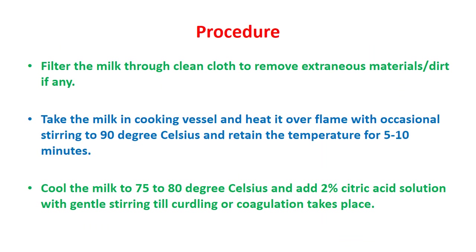Here we will discuss more details about the procedure. First, filtration of milk through cloth to remove extraneous materials or dirt. Second, the milk is heated — with a gas flame for small scale, or in a large stainless steel rectangular vessel with internal heating for large scale — up to 90 degrees Celsius and left for 5 to 10 minutes. After that it is slowly cooled to 75 to 80 degrees Celsius, the suitable temperature for coagulation. The coagulant is 2% citric acid solution prepared in warm water, which gives better results. While adding the coagulant, it should be mixed gently but thoroughly to ensure formation of a large coagulum mass.